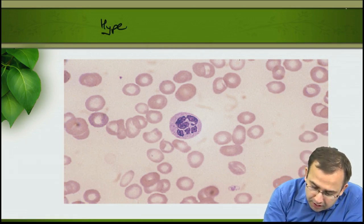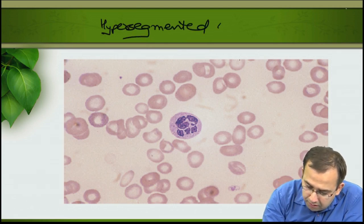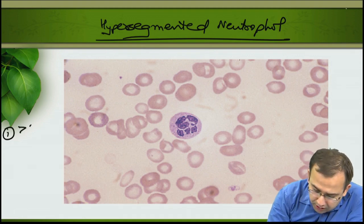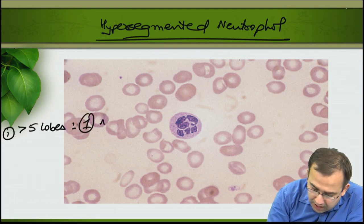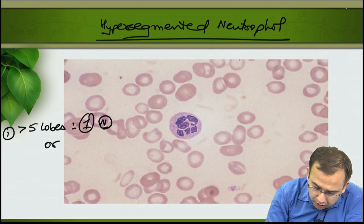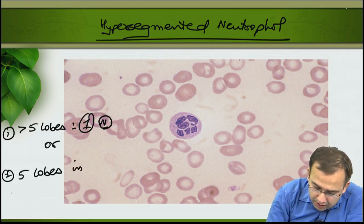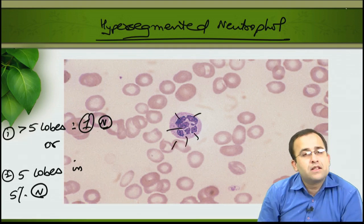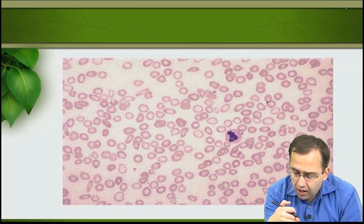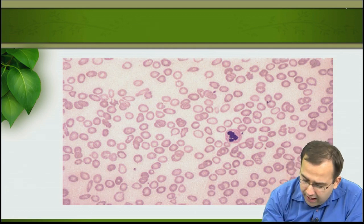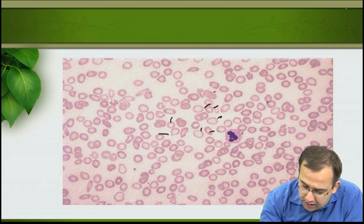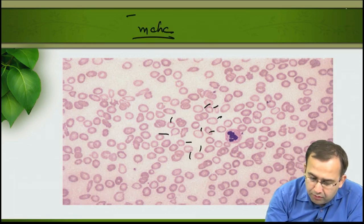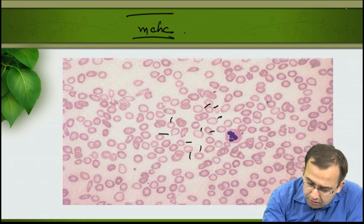A hypersegmented neutrophil has more than 5 lobes in a single neutrophil, or 5 lobes in 5% of neutrophils. Microcytic hypochromic RBCs show central pallor more than one-third, with hemoglobin present just as a peripheral rim. Most common cause is iron deficiency anemia.